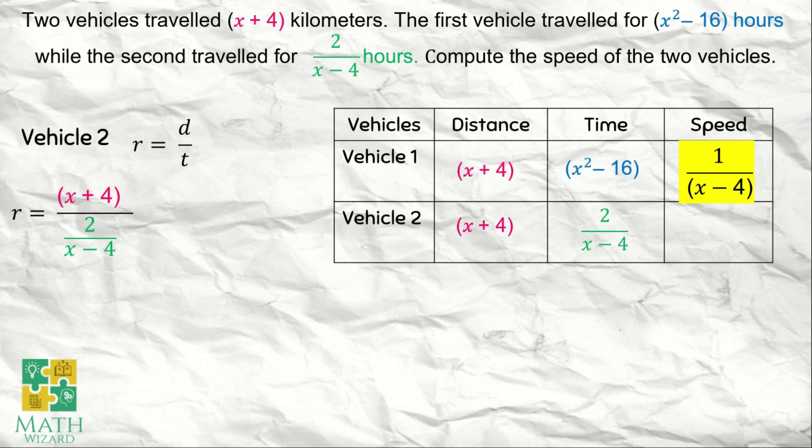This is an example of simplifying complex fractions. Let's rewrite this in this format: x plus 4 divided by 2 over x minus 4. We are going to apply the process in dividing rational algebraic expressions. What do we do? We copy this one. Next, we need to change this into multiplication and we flip this over. So this becomes x plus 4 times x minus 4 over 2.